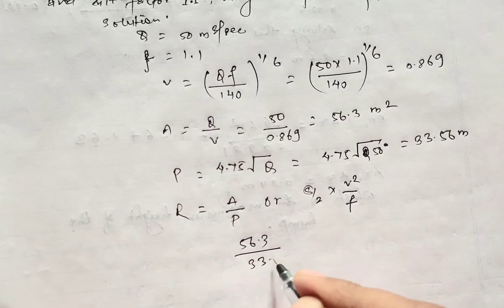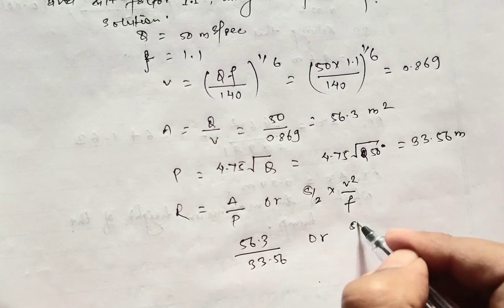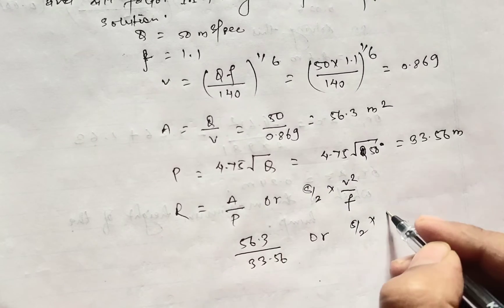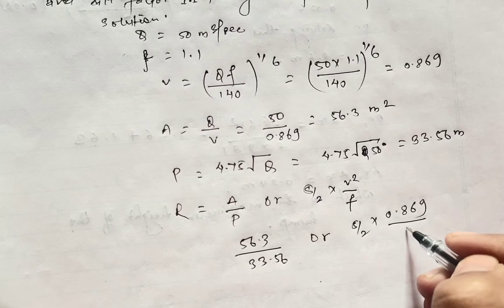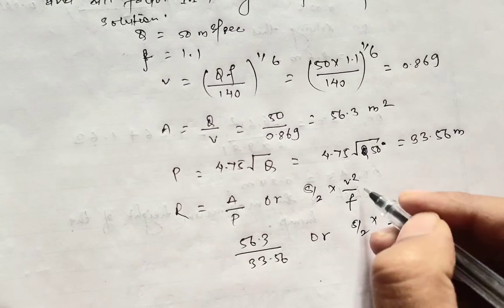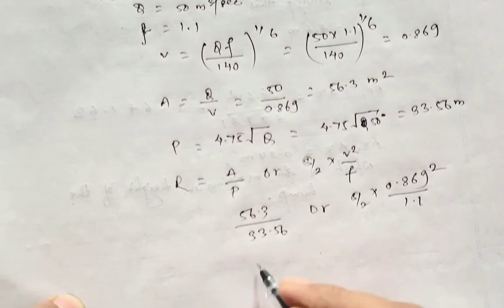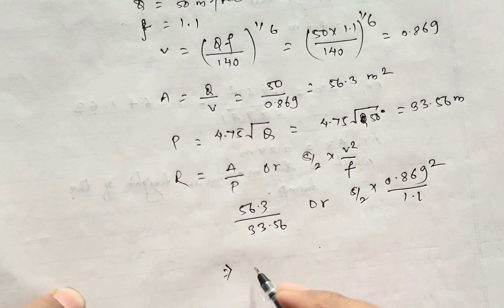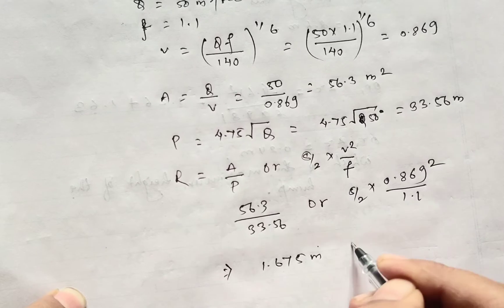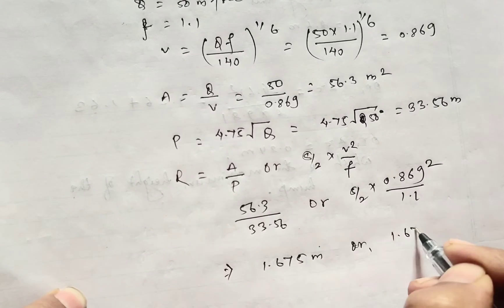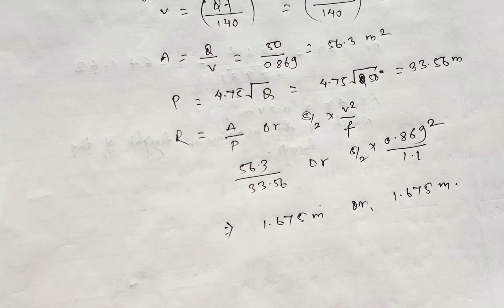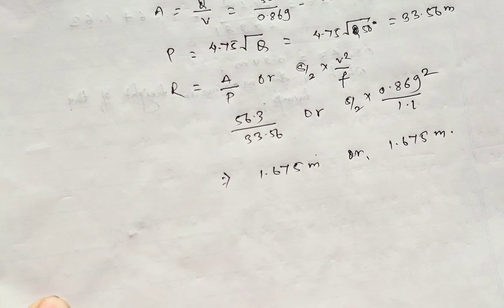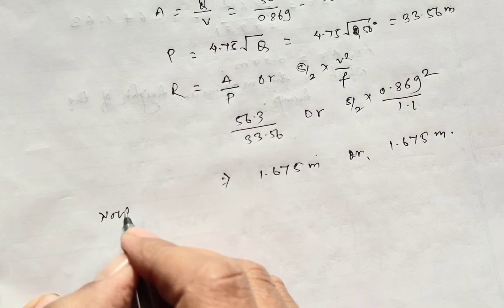Or 5 by 2 times velocity 0.869 squared divided by F which is 1.1. Both results will be the same, that is 1.675 meter. Now we'll consider the trapezoidal channel.